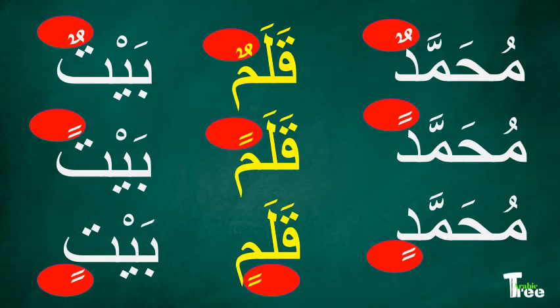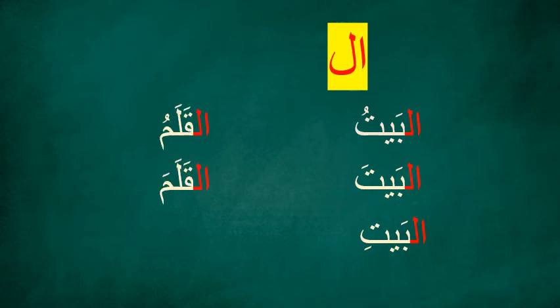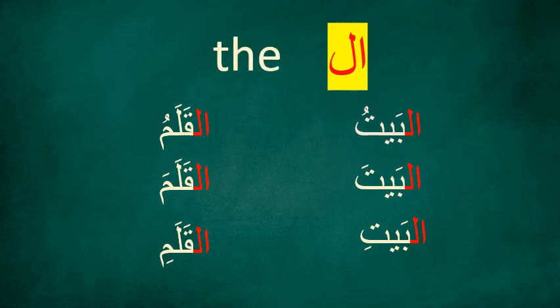Al is one more identification of a noun — only a noun accommodates al in front of it. So any word that has al in front of it can be identified as a noun. The meaning of al is the same as 'the' in English; it is a definite article. However, al has many other meanings.